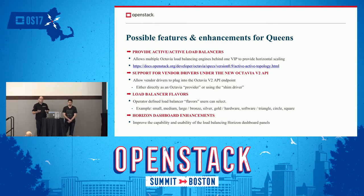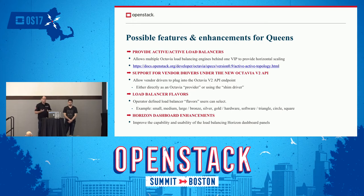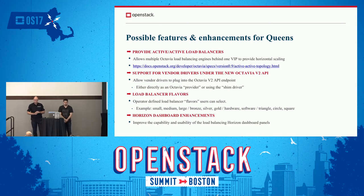For hardware and third-party vendors, flavors will allow unlocking specific features on their load balancers that we don't support in our API, since our API only supports things everybody can do. Some vendors have unique capabilities, and flavors will allow unlocking those — though if you switch vendors, portability is not guaranteed. The last near-term item is improving our Horizon dashboard. Right now it doesn't support Layer 7 load balancing configuration, but we want to add that in Queens and bring it to full parity.